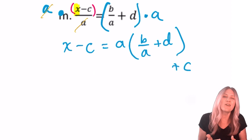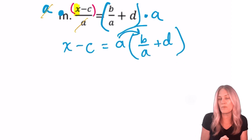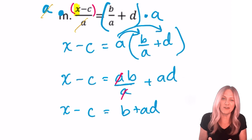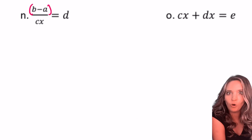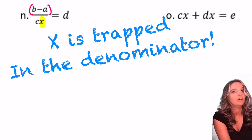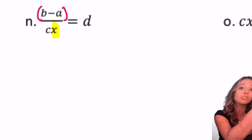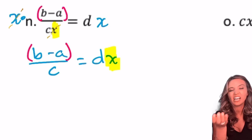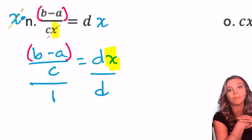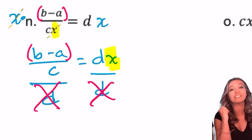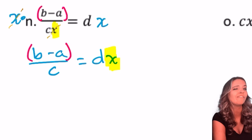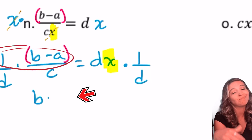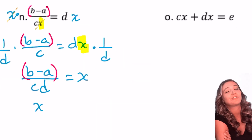Now the last step is simply add c to both sides. However, it cleans up nicely if we distribute the a first: the a's divide out in that first term, leaving b plus ad, then add c and we're done. Now the next one — x is trapped in the denominator! First, get x out by multiplying it up to the numerator. Now x is on the right side with a d in front, so undo that multiplication by dividing both sides by d. But that gives a big, messy double fraction. Instead, multiply by the reciprocal 1 over d on both sides: we get b minus a in the numerator and d times c, which is cd, in the denominator.